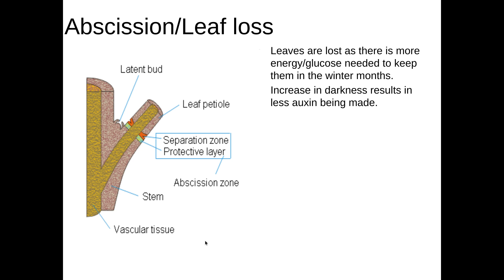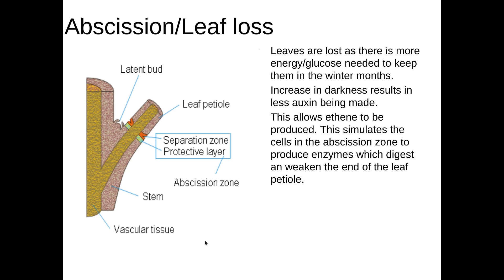The increase in darkness in shorter days results in less auxin being made, which allows ethene to be produced. Ethene stimulates enzymes in the abscission zone to be synthesized, and these enzymes digest and weaken the base of the leaf, causing the leaf to fall off. Fatty deposits and callus are then deposited in that area to prevent pathogens from causing disease.